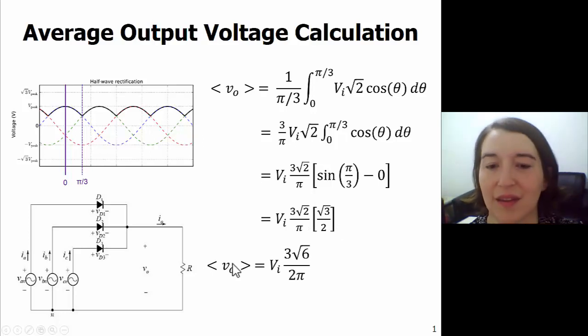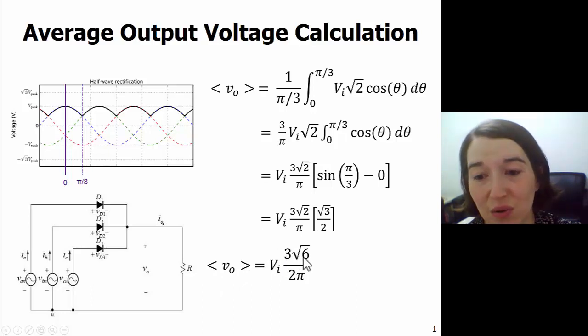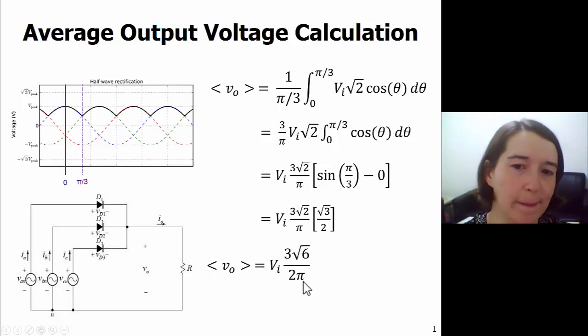And what we'll end up with is the average output voltage is VI times three times the square root of six divided by two pi. So this is your equation given your RMS value of your input voltage, and of course this assumes all ideal diodes.